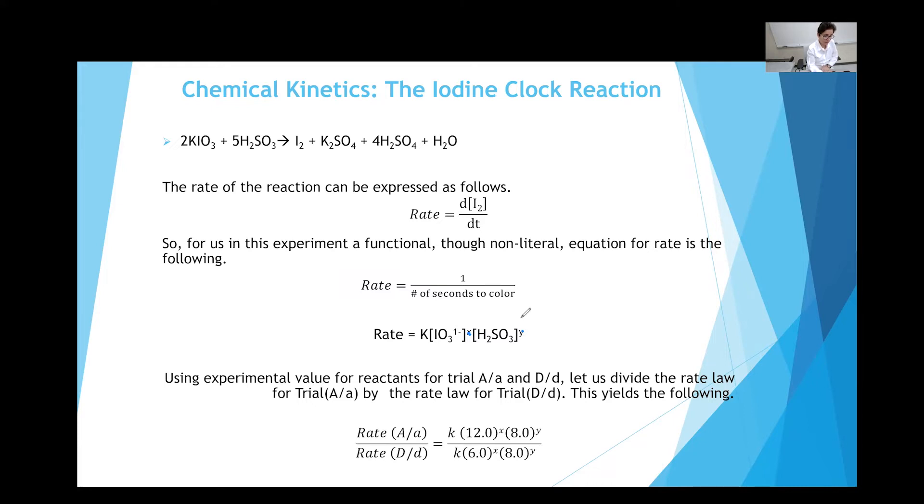You cannot look at the balanced equation and say it's two or five. It is not equilibrium. This is a rate law. For the rate law, you have to do this experimentally. And then say, if I change the concentration, let's say if I double the concentration of the iodate ion here, instead of using six, I'm using 12, how is that going to change the rate?